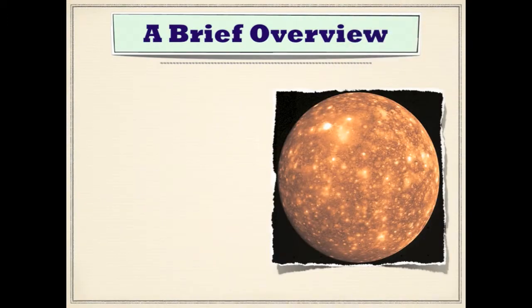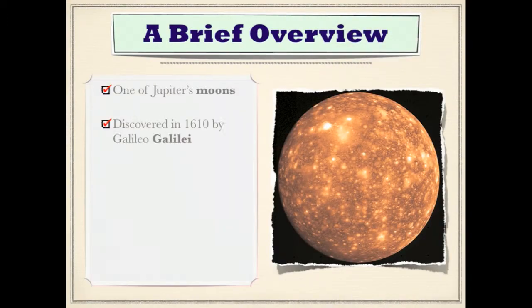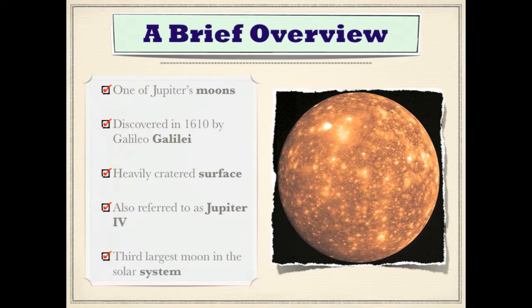I'll start off with a brief overview. As stated previously, Callisto is one of Jupiter's moons and was discovered in 1610 by Italian astronomer Galileo Galilei. It also has a heavily cratered surface, as you can probably tell from the picture on the right hand side. All of the dots that you see on Callisto's surface are actually craters.